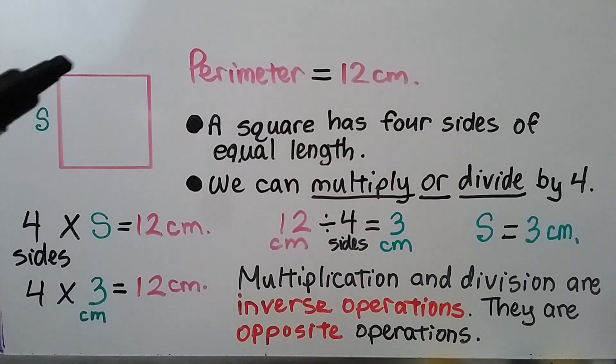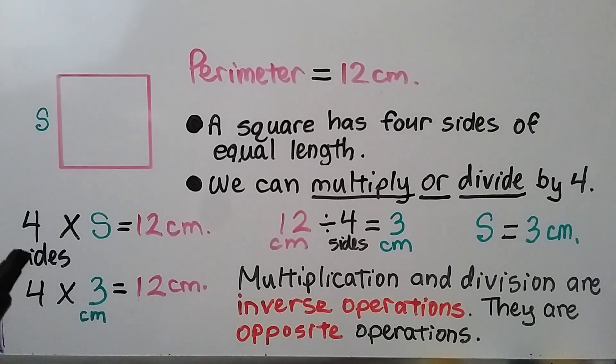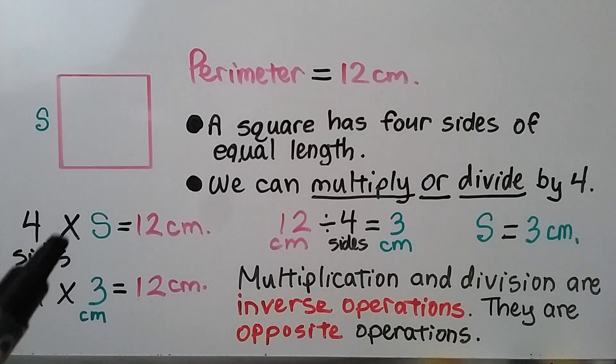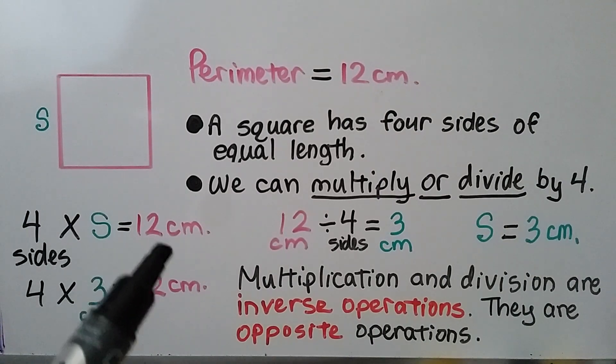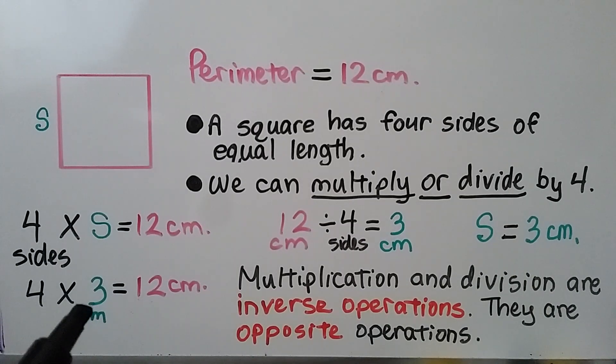For this square, we know the perimeter is 12 centimeters, but it didn't even give us a side length. It just says s for side. A square has four sides of equal length. We can multiply or divide by 4, and we can solve this. It's got 4 sides times some number, some amount, equal to 12 centimeters. We know 4 times 3 is equal to 12, so 4 times 3 centimeters equals 12. We'll know that each side must be 3 centimeters.